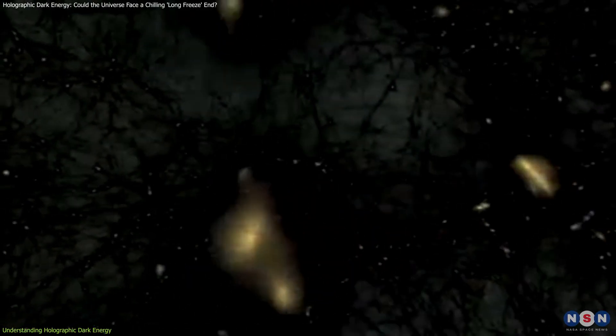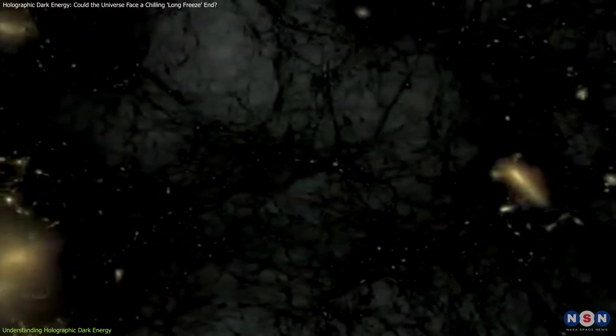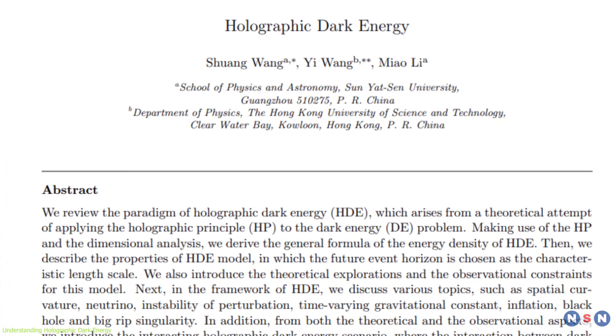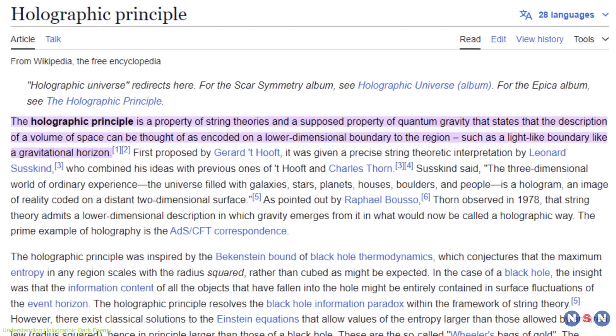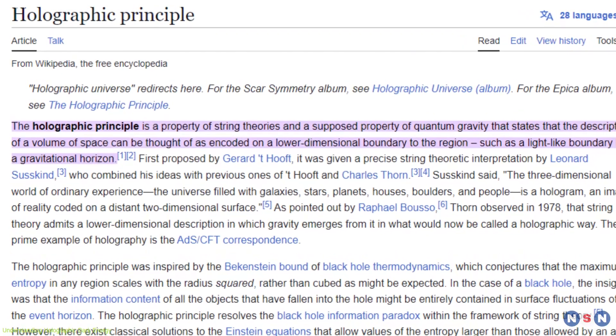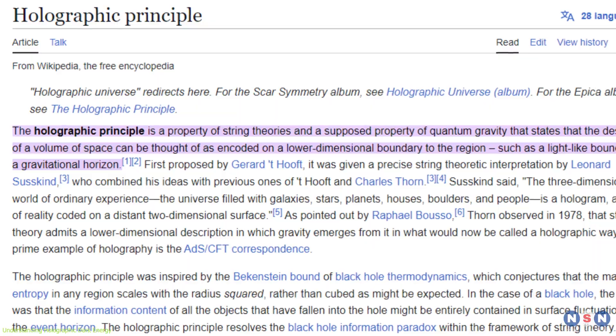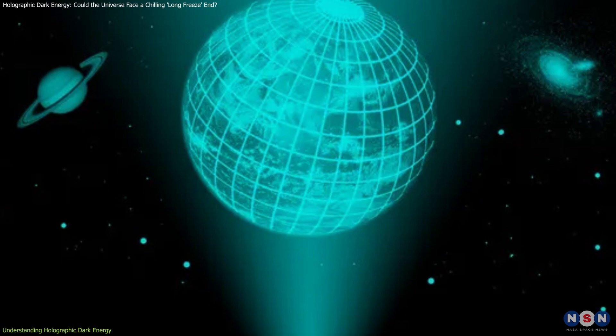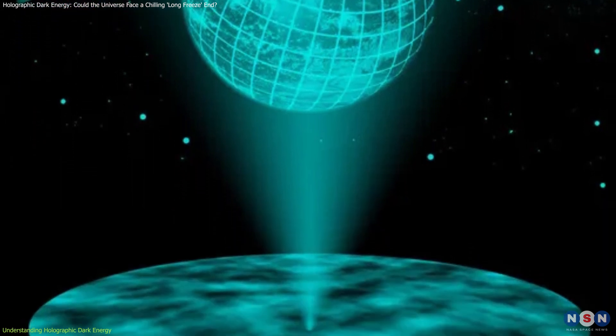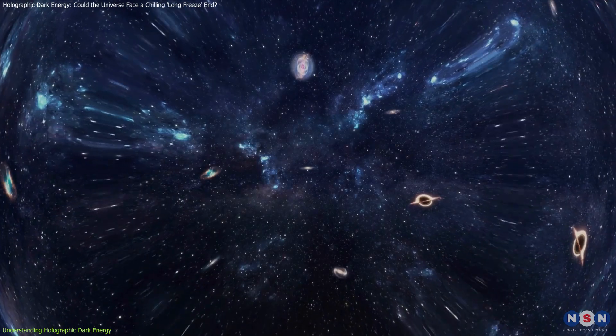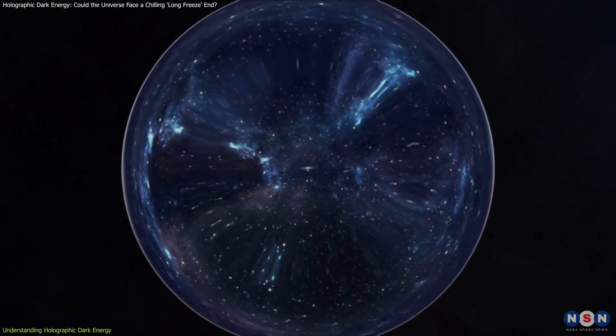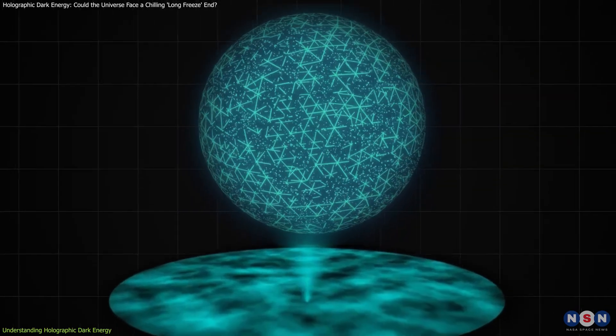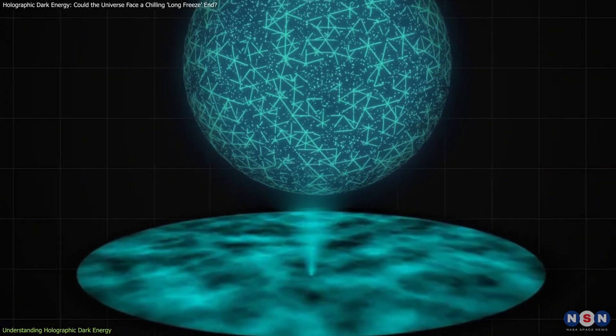But what if dark energy isn't just a force embedded in the fabric of space? This brings us to the theory of the holographic dark energy model. This theory is based on the holographic principle, a concept from quantum gravity suggesting that all the information in our three-dimensional universe could actually be encoded on a two-dimensional boundary. Essentially, what we perceive as three-dimensional space might be a sort of cosmic hologram with its true nature hidden on a distant two-dimensional surface.